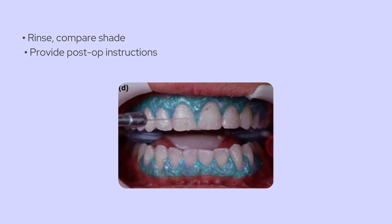One last thing to keep in mind is that bleaching doesn't affect restorations like composites, crowns, or veneers. So if the patient has any anterior restorations, they might need to be replaced after bleaching to achieve an even shade. And if sensitivity is an issue, fluoride or potassium nitrate gels can help.